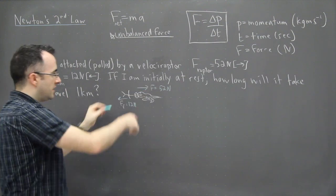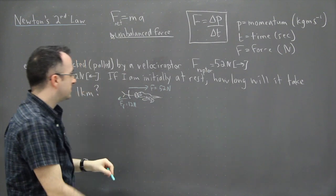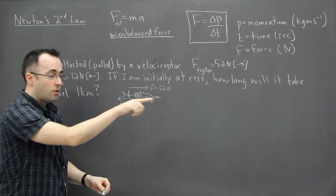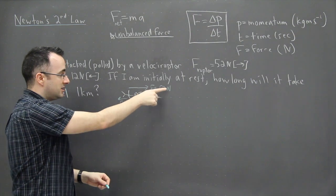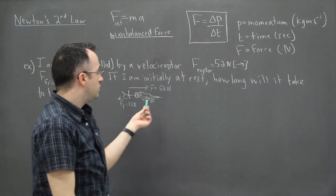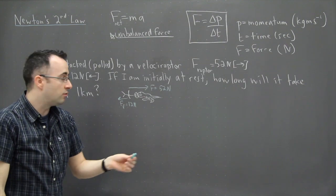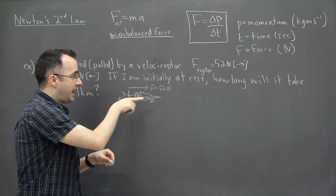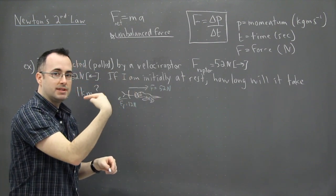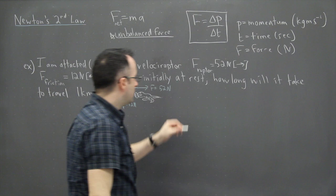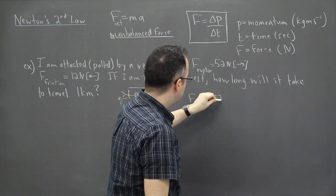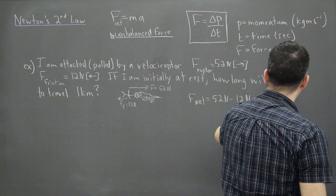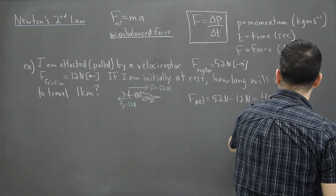My 12 newtons should be a lot shorter than my 52 newtons arrow. I'm being dragged this way because that force wins over the other. In order to do anything else, I first need to figure out the net force - the resultant force. When these two vectors are added together, I have 52 this way and 12 newtons that way, so I subtract. F net is going to be 52 minus 12 newtons, so the result is 40 newtons to the right. That's my net force.